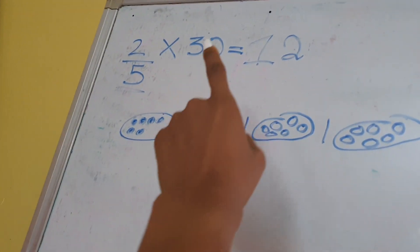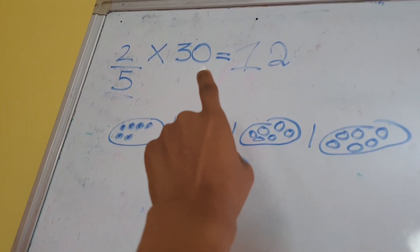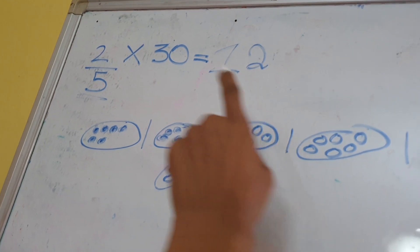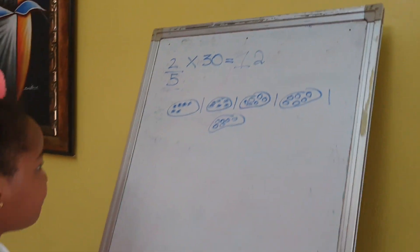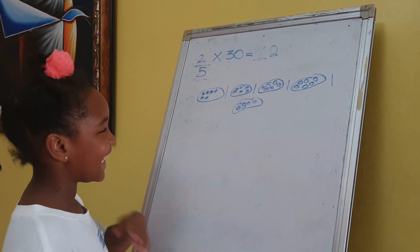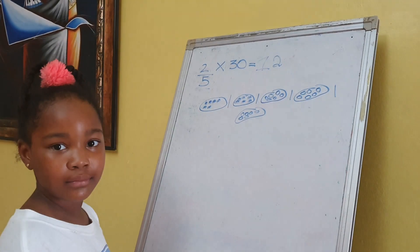Five into thirty goes six times. Six twos are twelve. Brilliant, very cool. I'll give you like 200 more, okay?